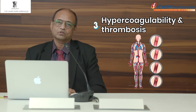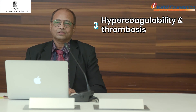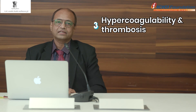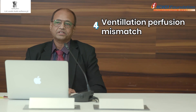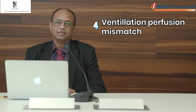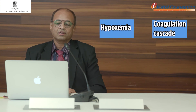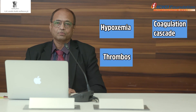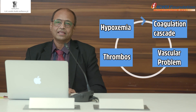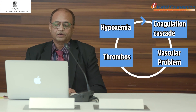Because of these two things — thrombosis and hyper-inflammation in the alveoli and interstitium — the basic defect is ventilation-perfusion mismatch, and ultimately the patient lands in refractory ARDS. Once hypoxemia sets in, a vicious cycle begins: hypoxemia activates the coagulation cascade, causing thrombosis, which causes vascular problems, which again worsens hypoxemia.